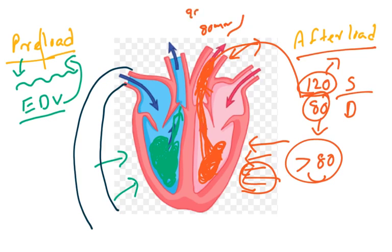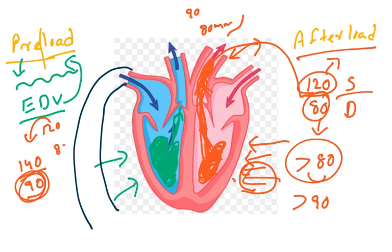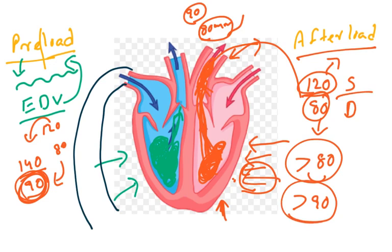If the diastolic pressure becomes 90, the left ventricle has to generate pressure more than 90. Remember hypertension is defined as anything more than or equal to 140/90 — systole raised from 120 to 140 and diastole from 80 to 90. This 10-unit increase in diastolic pressure causes hypertension because it puts pressure on the left ventricle, which must generate even greater pressure to pump blood, damaging the heart over time. That is what afterload represents.